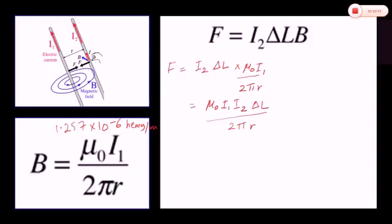We apply Fleming's left-hand rule to find the direction of force, where force, magnetic flux density, and current are all mutually perpendicular to each other. The field produced due to current in a wire is determined by the right-hand rule. We have already studied both of these rules in our previous videos.